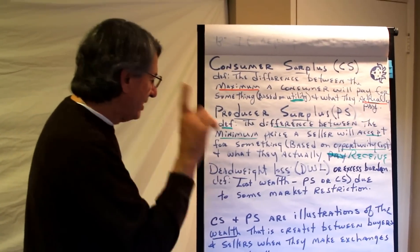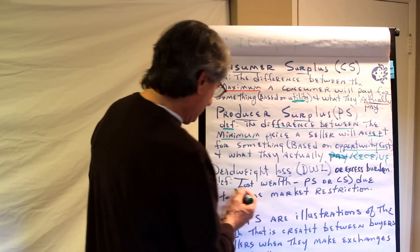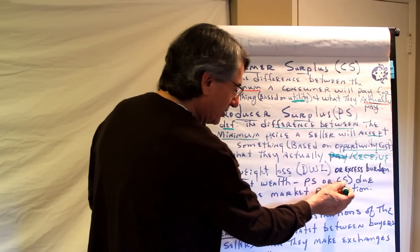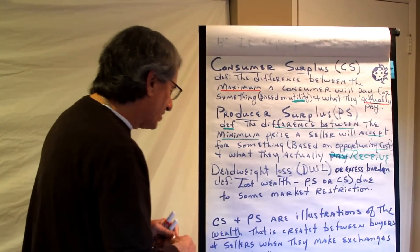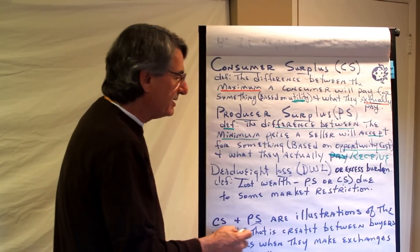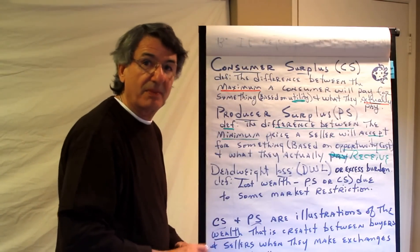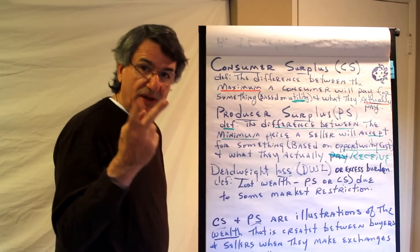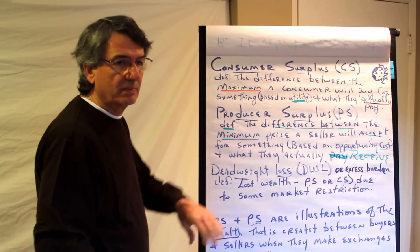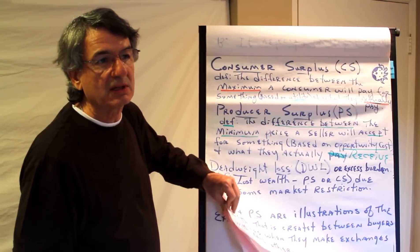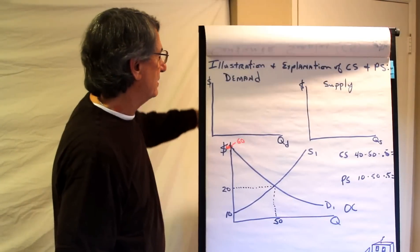Deadweight loss is lost wealth — lost producer or consumer surplus due to some market restriction. Consumer surplus and producer surplus are really illustrations of the wealth that comes from buyers and sellers trading with each other in markets at whatever they find to be mutually beneficial trading terms.